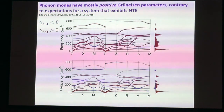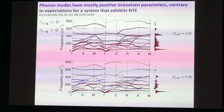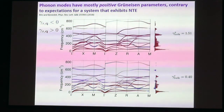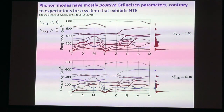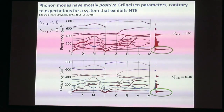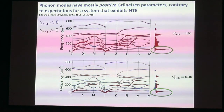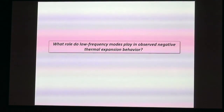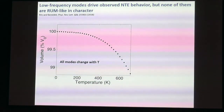Because lead titanate is tetragonal in its ferroelectric phase, the mode Gruneisen parameters are different along the C-axis than along the A-axis. The bottom plot shows modes along the C-axis—there are more negative mode Gruneisen parameters here, but still a lot of positive ones. Summing all of these across the Brillouin zone gives bulk Gruneisen parameters that are positive along both directions. If you were expecting a negative Gruneisen parameter along C because C shrinks with temperature, this would be a little confusing.